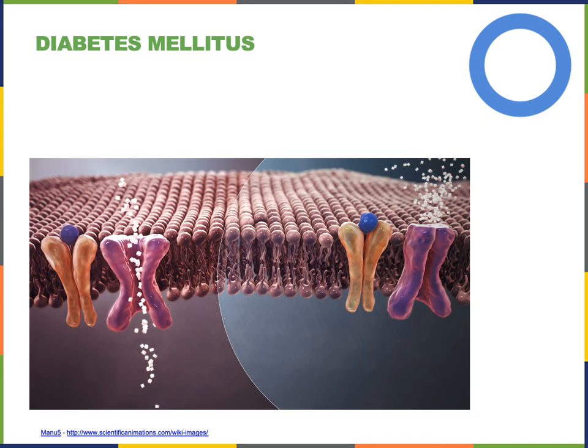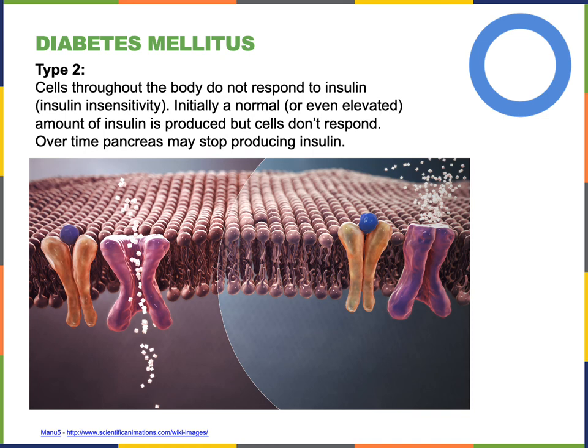In contrast to type 1 diabetes, there is type 2 diabetes, in which cells throughout the body do not respond to insulin — that is, they become insensitive to insulin. Even though the pancreas is initially producing large amounts of insulin, the insulin receptors are not responding, and cells cannot take glucose out of the blood. This leads to elevated blood glucose levels and the three cardinal signs of diabetes: polyuria, polydipsia, and polyphagia.